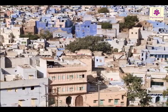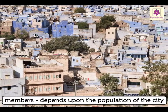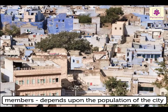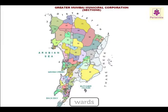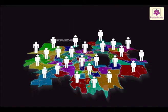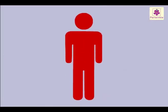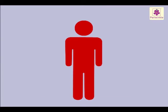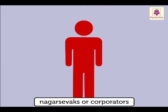The total number of members of the Municipal Corporation depends upon the population of the city. The city is divided into wards for election purposes. The members are elected for a term of 5 years by the residents. Each ward is represented by an elected member. Members of the Municipal Corporation are called Nagarsevaks or Corporators.